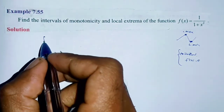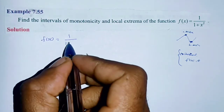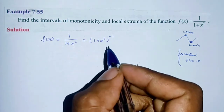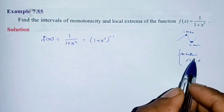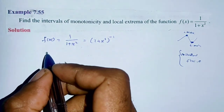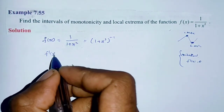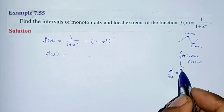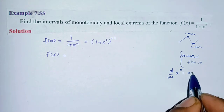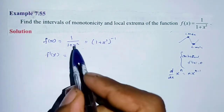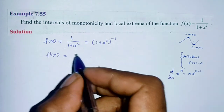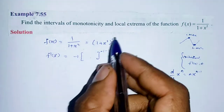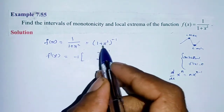First, we write f(x) = 1 divided by (1 + x²), which equals (1 + x²) to the power of minus 1. Now we differentiate using the power rule: d/dx of x^n equals n times x^(n-1). Applying the chain rule, we bring down the power: minus 1, whole power minus 1 minus 1.